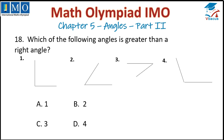Question number 18: Which of the following angles is greater than a right angle? A right angle is 90 degrees. The first options are acute, the next is acute, and this one is obtuse, which is greater than 90 degrees. So option D is correct.